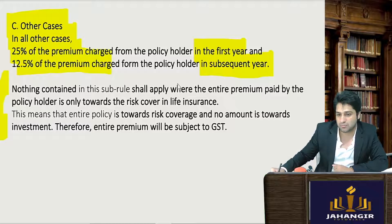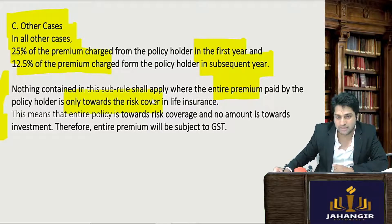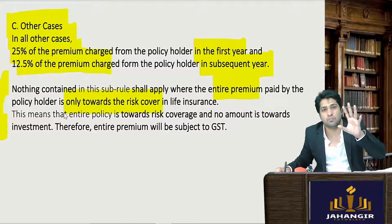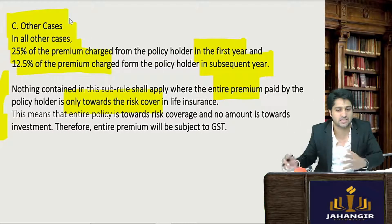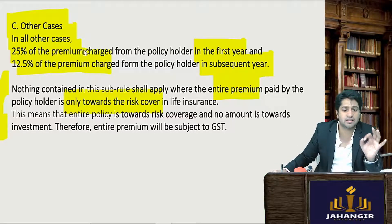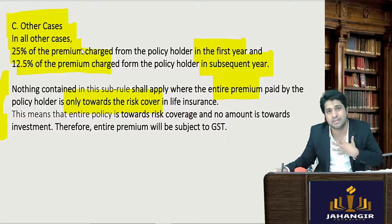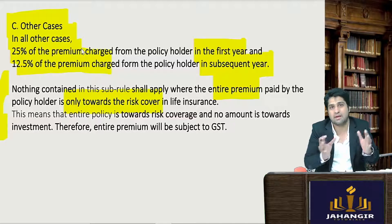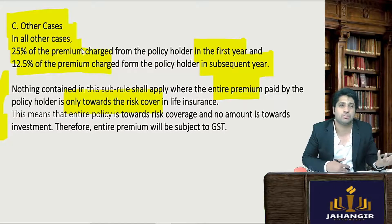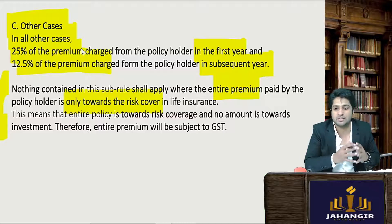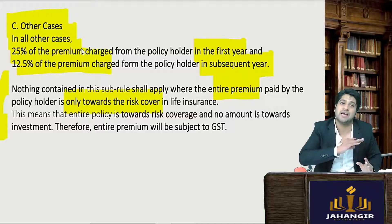Note: this sub-rule shall not apply where the entire premium paid by the policyholder is only for the risk cover in life insurance — meaning if someone dies within the time span, the beneficiaries get the insured amount. The entire premium is covering the risk; there is no investment, no savings, no other type. If it's a plain pure risk cover, then it falls under category A and the entire premium charged is the value of supply.